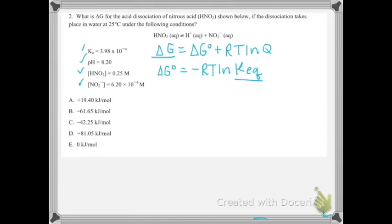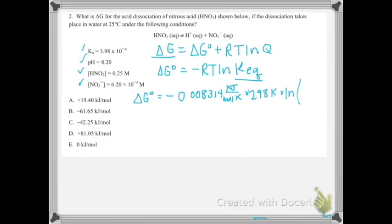So we can set this up: ΔG° = −RT·ln(K). We'll use R = 0.008314 kJ/(mol·K), the temperature needs to be in Kelvin so that's 298 K, times the natural log of K = 3.98 × 10⁻⁴. When you evaluate that on your calculator, you find that ΔG° = 19.4 kJ.